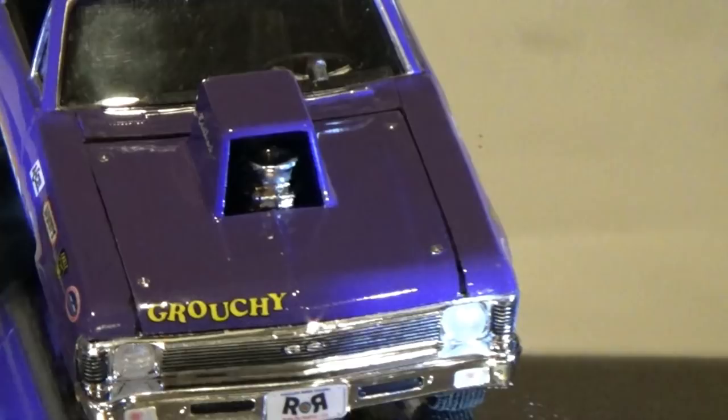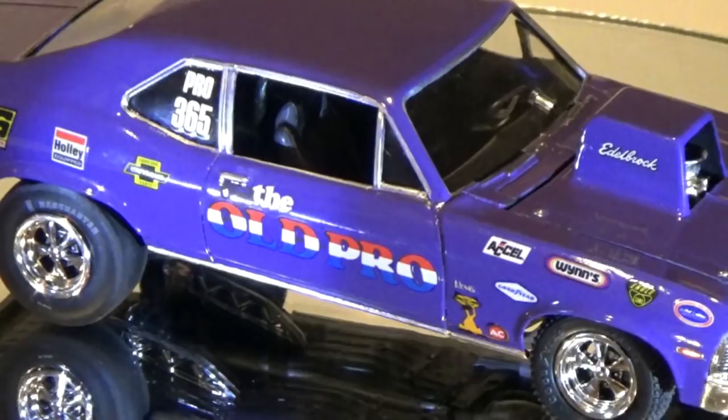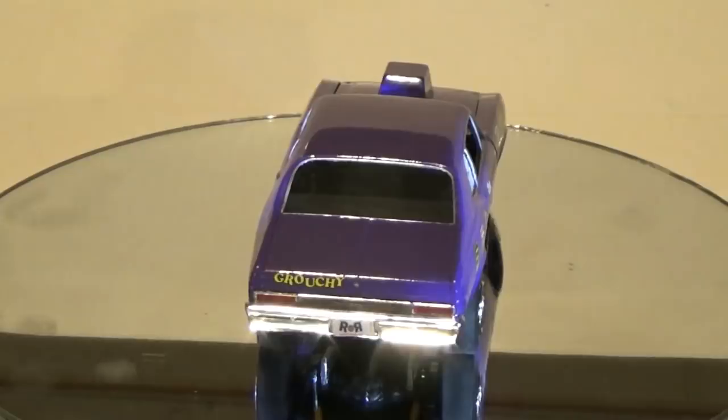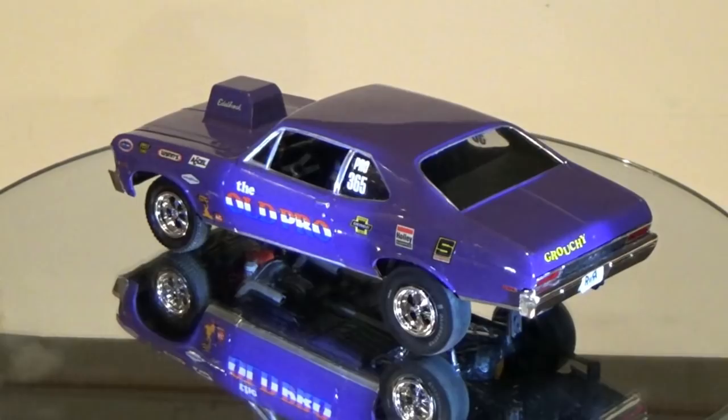The kit includes a stock 350 or 454 cubic inch race motor, both of which are nicely detailed. The chassis is basic but well-defined, and the interior is sparsely detailed, just like the real Nova. When you're done, it'll be about 7½ inches long, 2¾ inches wide, and 2¾ inches high.